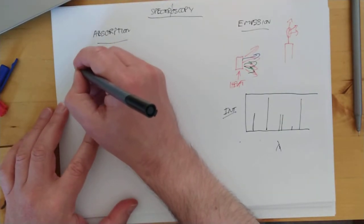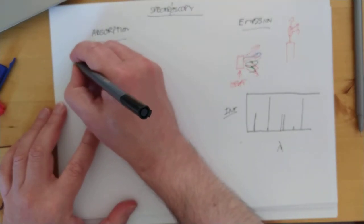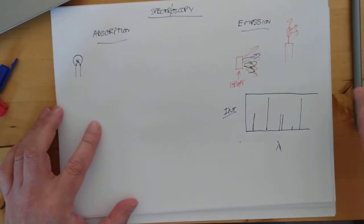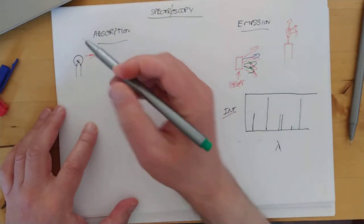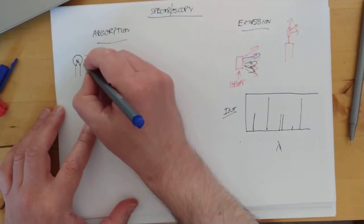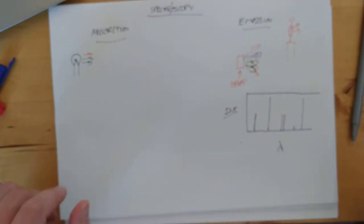Because what we do in absorption spectroscopy is we have a sample of light. So we have a light sample here, and it's given off the whole spectrum from red through to green and blue, for example. So the whole spectrum is coming off here. In other words, it looks like a white light.